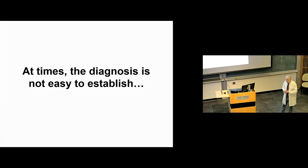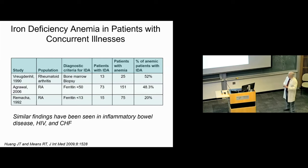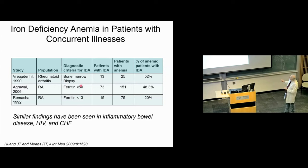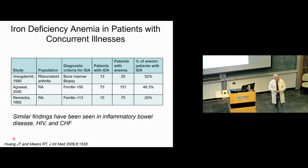Iron deficiency is easy to identify sometimes, but not always. These are studies looking at iron deficiency in various settings including rheumatoid arthritis, inflammatory bowel disease, HIV, and heart failure. In three different studies of patients with rheumatoid arthritis, using different diagnostic criteria, it was found that 20 to 50% of people with anemia also had concurrent iron deficiency. So we shouldn't automatically attribute anemia in these settings to anemia of chronic disease — iron deficiency is often a concurrent contributing cause.